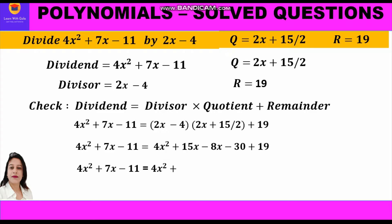Combining like terms: 4x² stays, 15x − 8x = 7x, and −30 + 19 = −11. The right-hand side is 4x² + 7x − 11, which is exactly the same as the dividend on the left-hand side. The division algorithm is satisfied and our answer is correct.